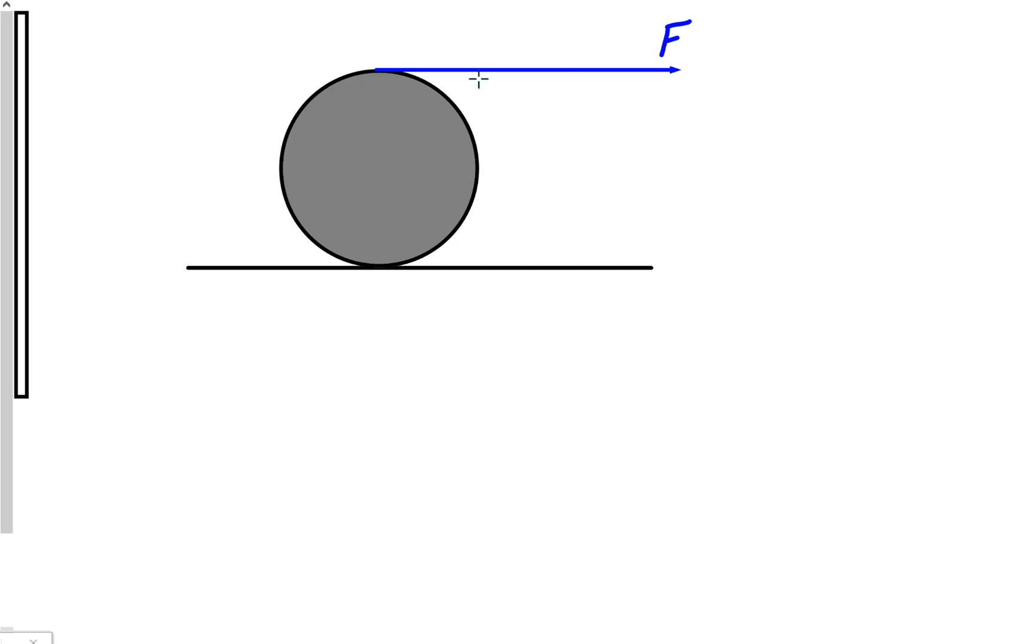So this problem I've actually seen before is about a solid cylinder. I think they've all been solid cylinders so far. And there is a cord or something wrapped around it, and somebody is pulling it.